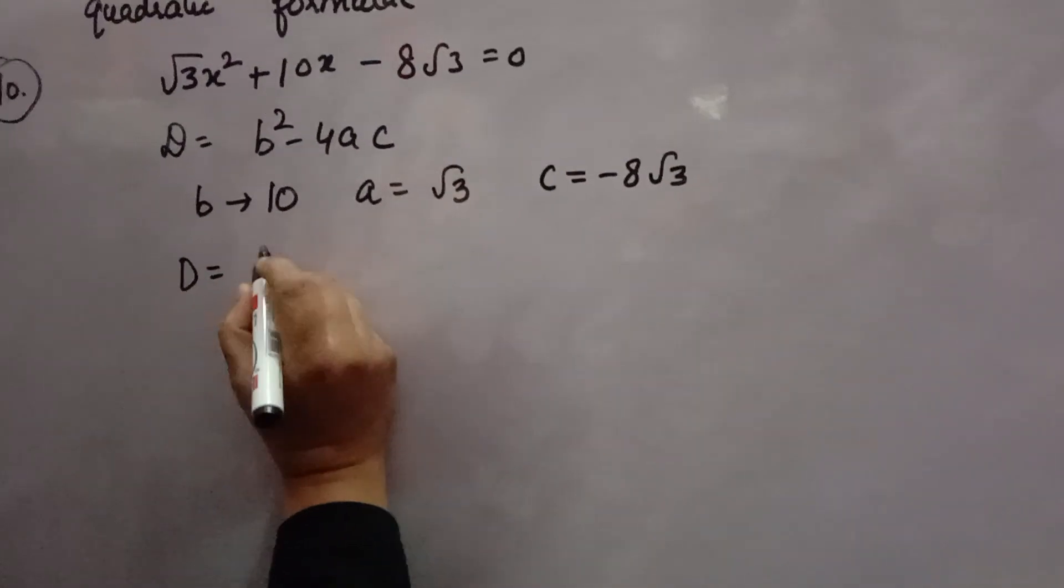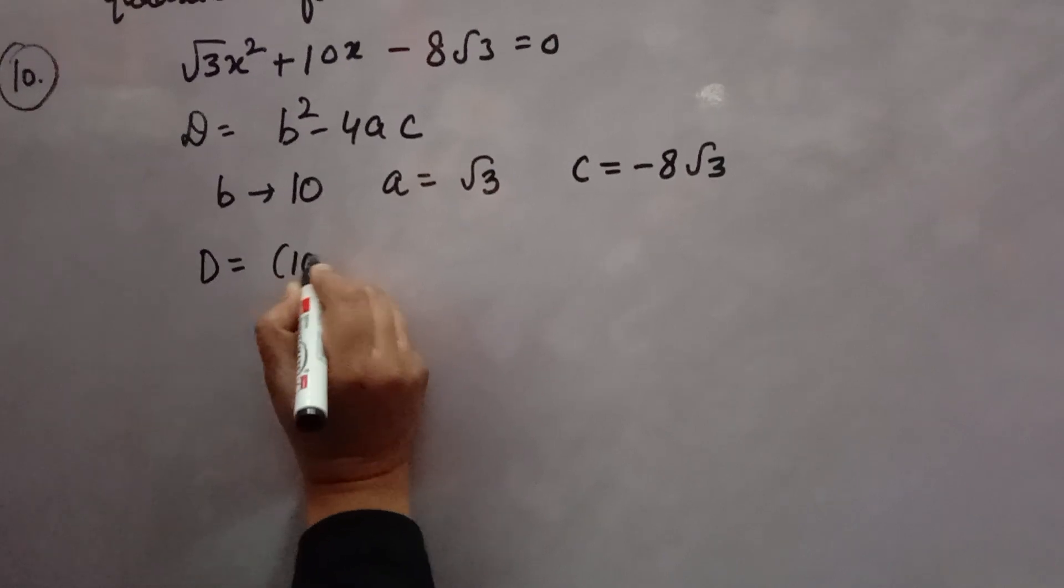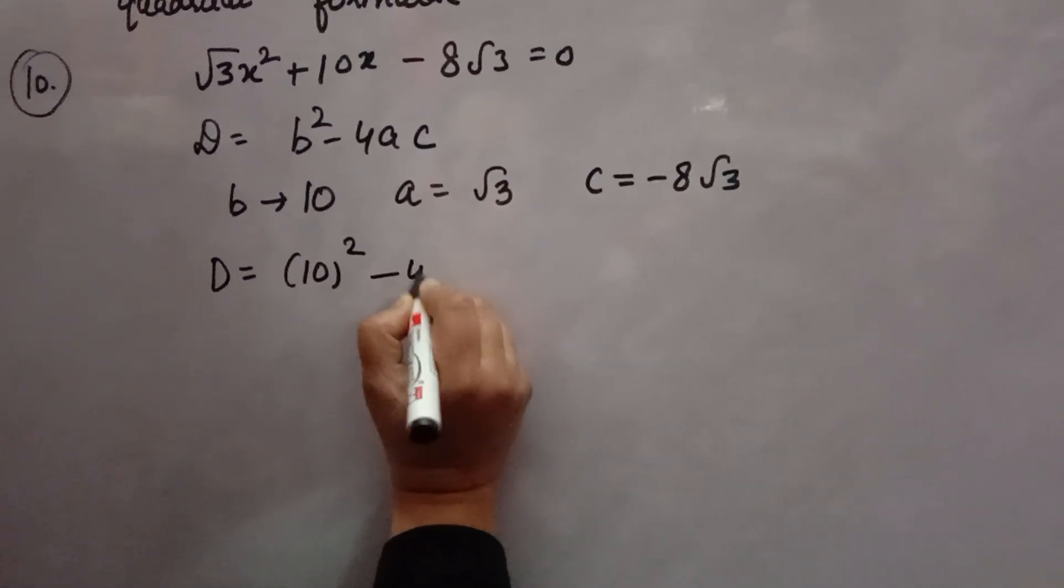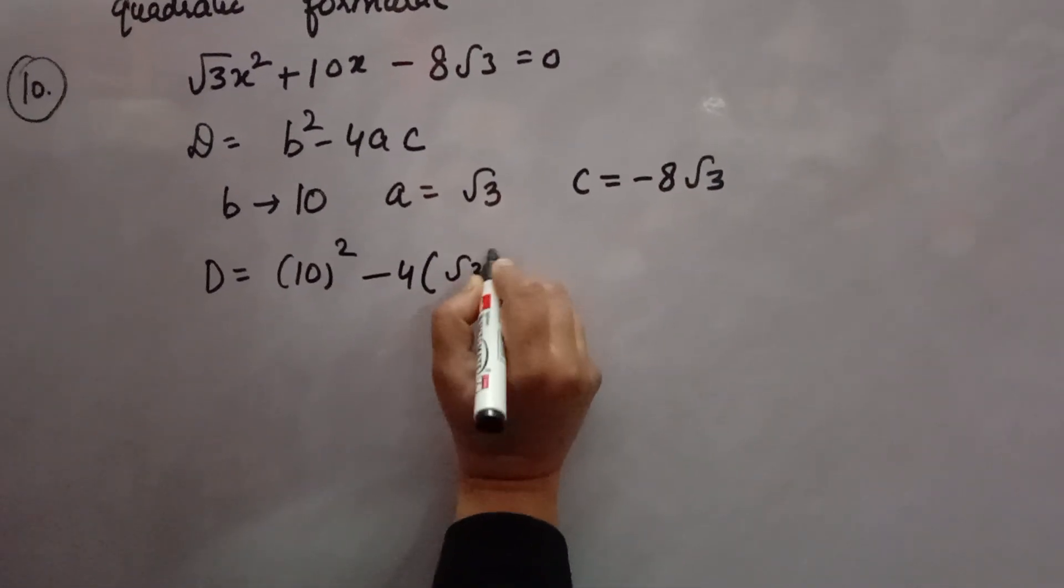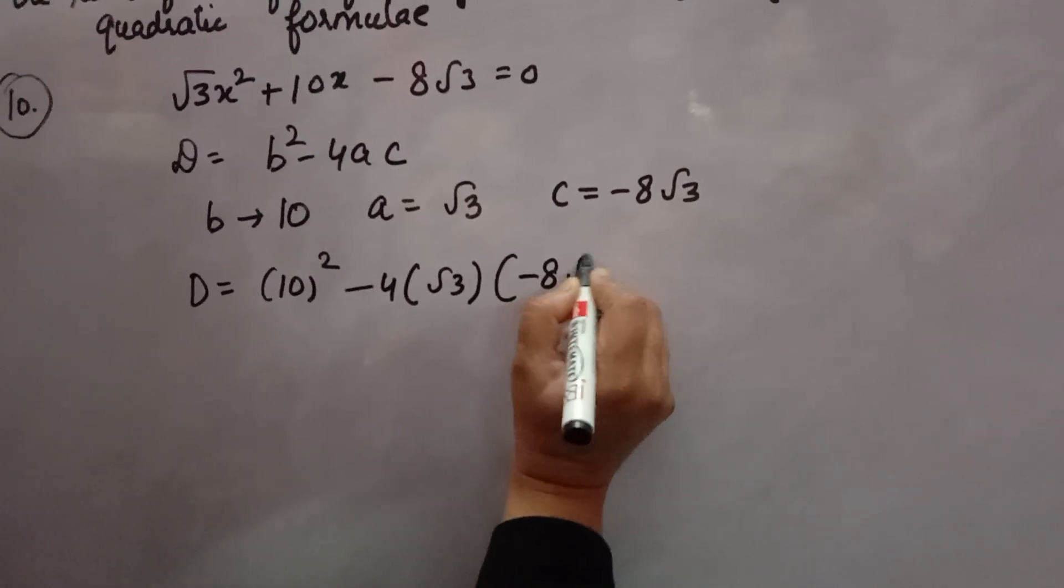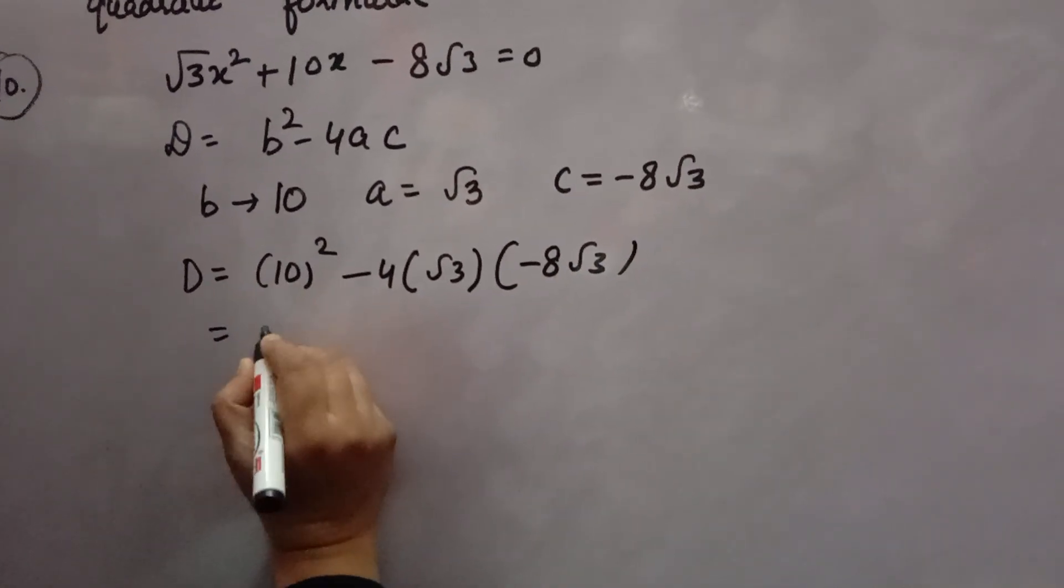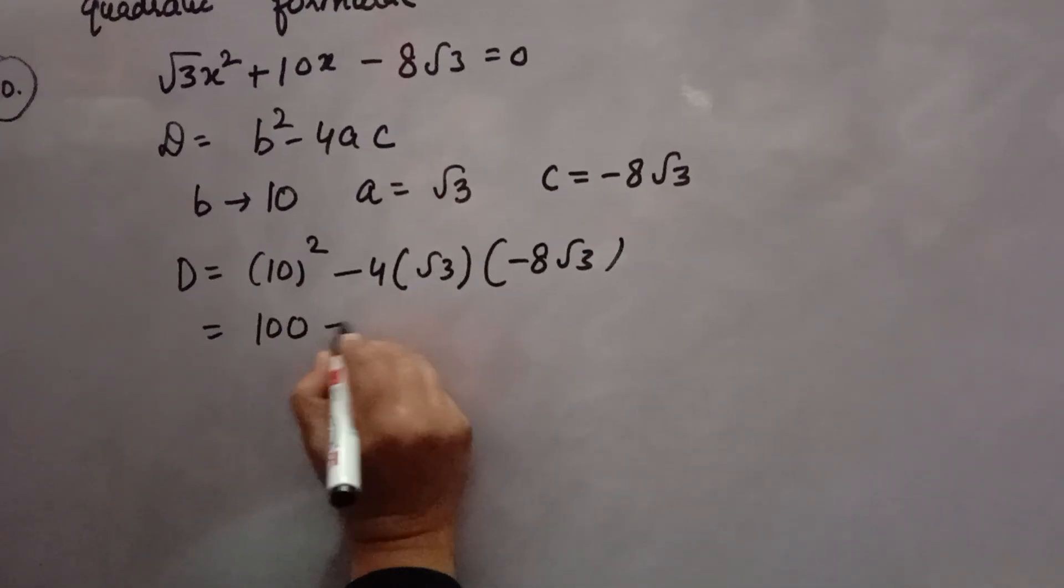Now, you will find b squared, means 10 squared minus 4 into a. a is root 3, c is minus 8 root 3. Now, you will solve it further. 10 squared is 100, minus minus is plus.